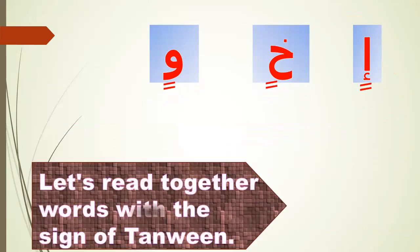Alif kasratan, alif kanaran. Qha kasratan, qin. Waw kasratan, win. Let's read together words with the sign of tanween with kasra, please repeat after me.